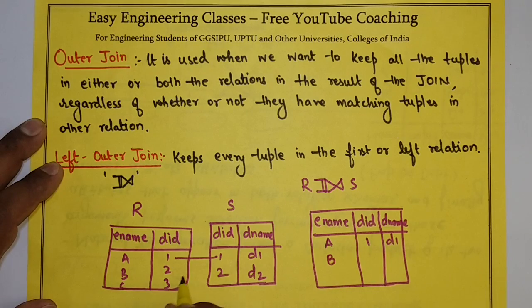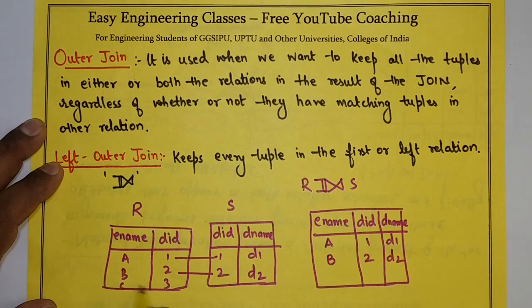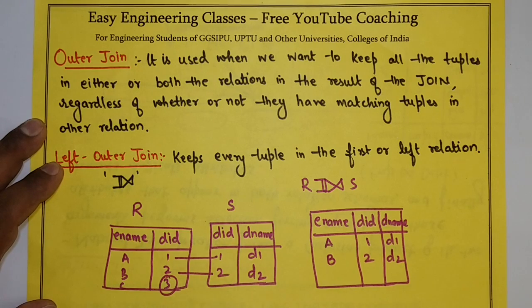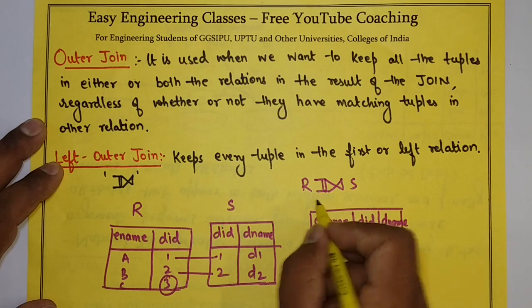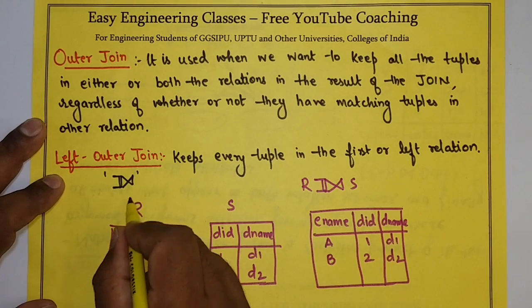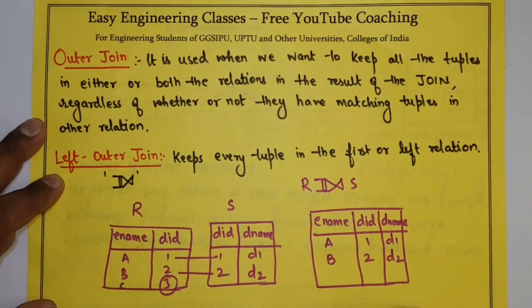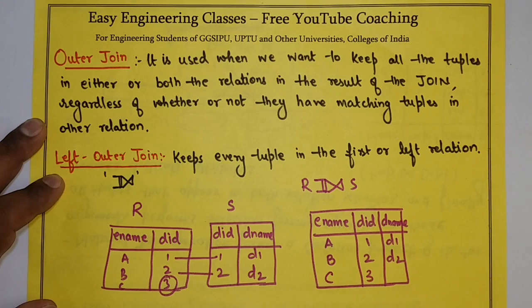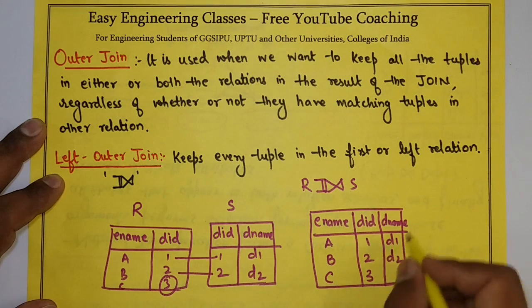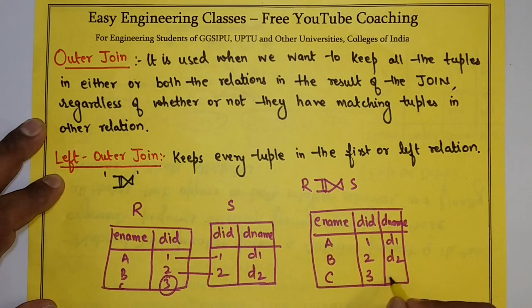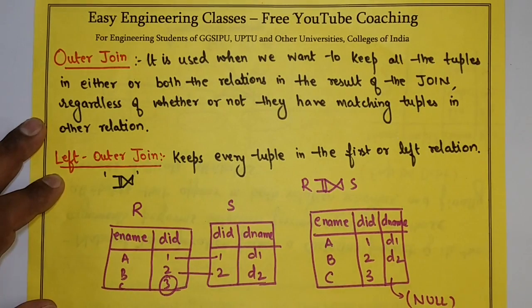Similarly, employee name B with department id 2 maps to D2 — this also matched. But you will see that for department id 3, there is no matching value on the right side, so the department name will be NULL.